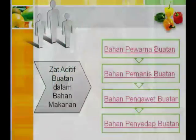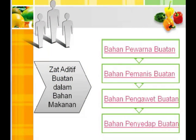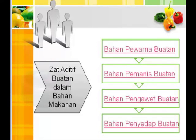Zat aditif buatan dalam bahan makanan mencakup empat hal, yaitu bahan pewarna buatan, bahan pemanis buatan, bahan pengawet buatan, dan bahan penyedap buatan.